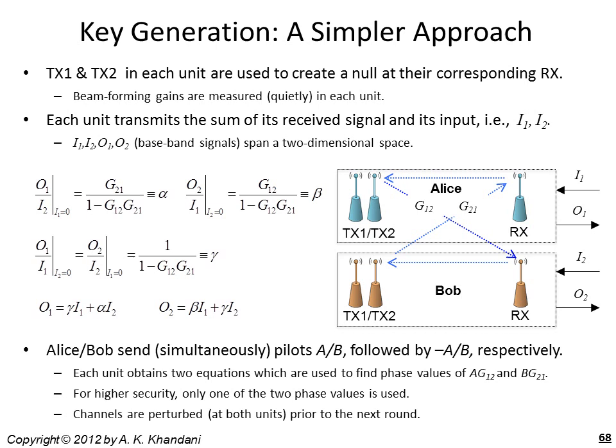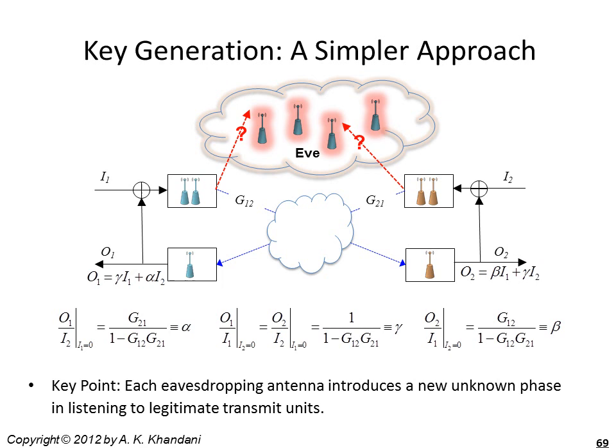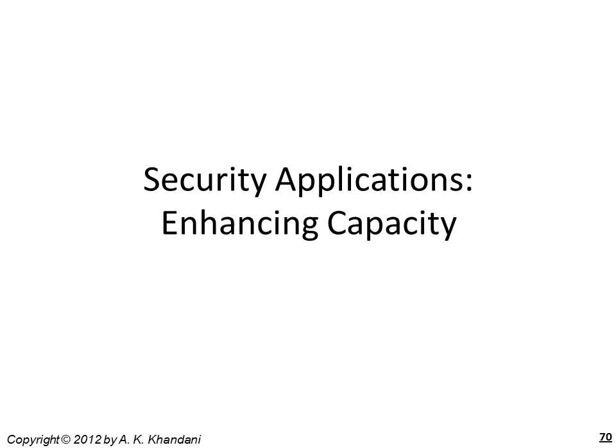An alternative setup has the advantage that antennas do not need to be connected to both transmit and receive chains. The four-dimensional vector of input and output signals spans a two-dimensional space, and in steady state the gain from I1 to O1 equals the gain from I2 to O2, similar to reciprocity in the previous setup. Alice and Bob simultaneously transmit a known pilot; in the next transmission one changes the sign. This provides enough equations to compute two phase values G1,2 and G2,1, one of which is used as a common phase key. Subsequently the channel is perturbed at both transmit antennas, they measure their respective self-channels for collective beamforming, and the process continues.